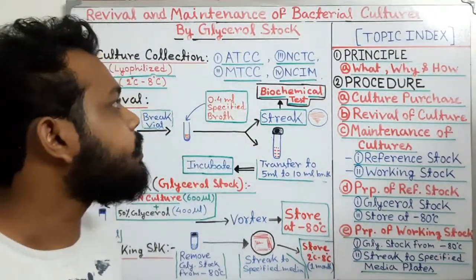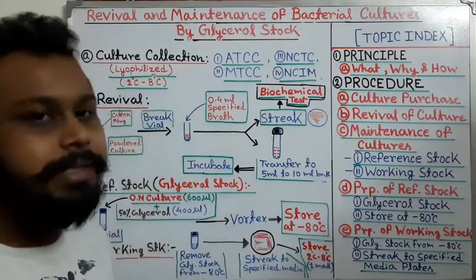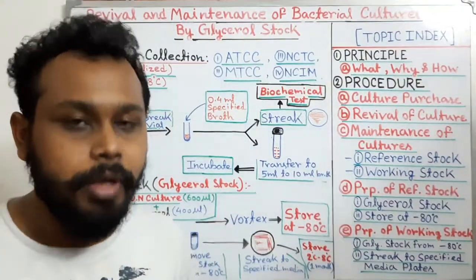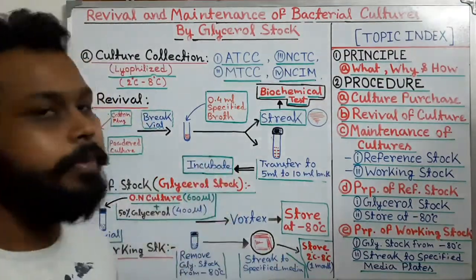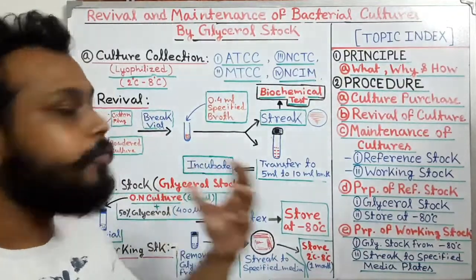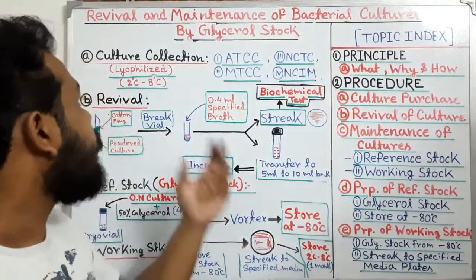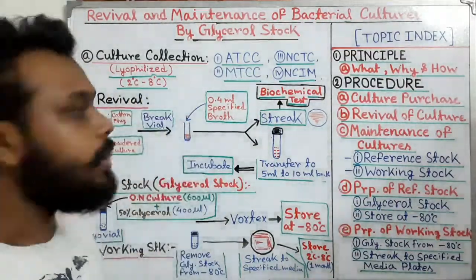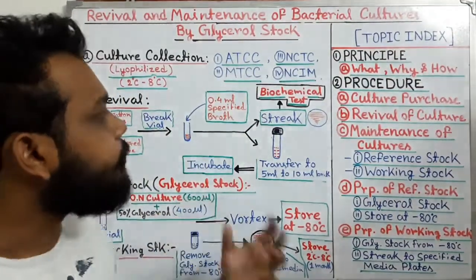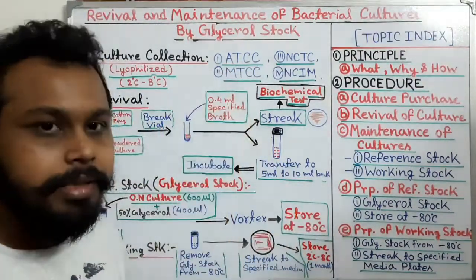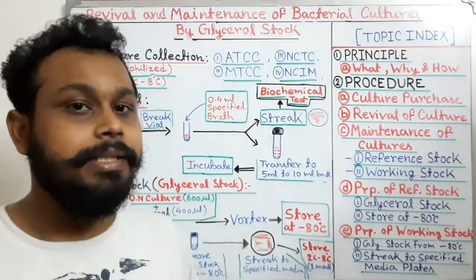Most bacterial organisms will be received in their lifeless condition — that means in powder form — though some can also be bought in liquid condition. After getting those bacterial cultures from the culture collection organization, we have to store them in our refrigerator at 2°C to 8°C.